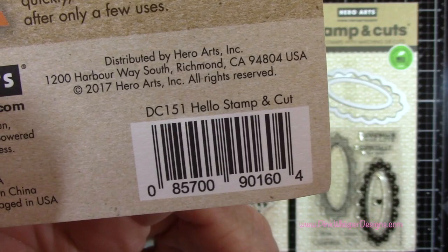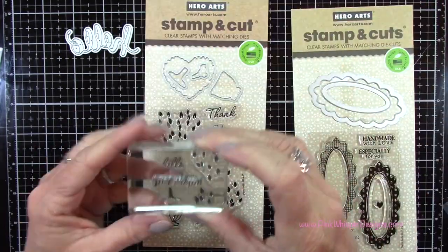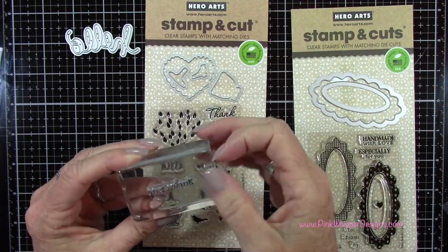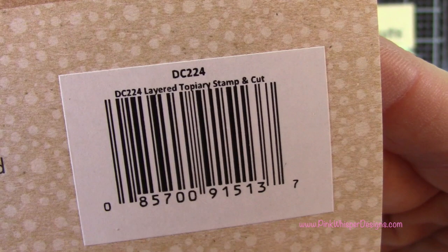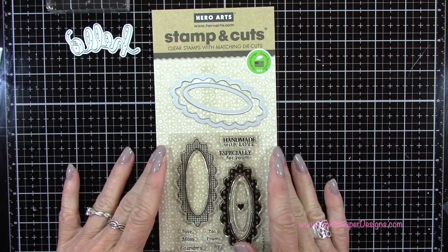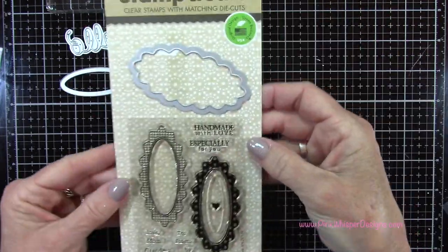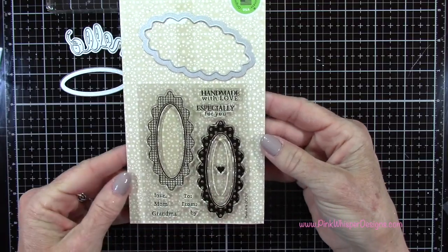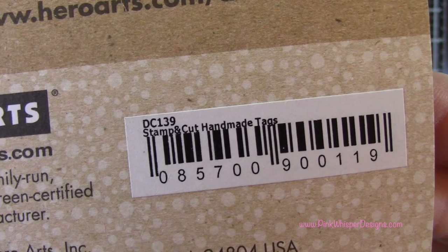Now I'm going to be using the word hello from the hello stamp and cut set from Hero Arts and then I'm going to be using that sentiment just saying and I placed it on an acrylic block and that's from the layered topiary stamp and cut set. And the last one I'm going to be using is this little oval die and you can see you get some really cute images on here from the stamp and cut handmade tags set.